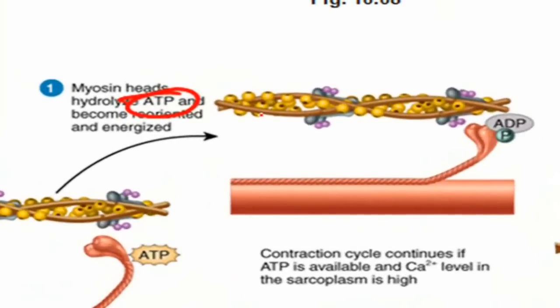What's going to happen in the contraction part is that the myosin heads are going to break down ATP into ADP and phosphate — adenosine triphosphate into adenosine diphosphate and phosphate. That is going to reorient the position of the myosin into a position to grab the actin, and it's energized.